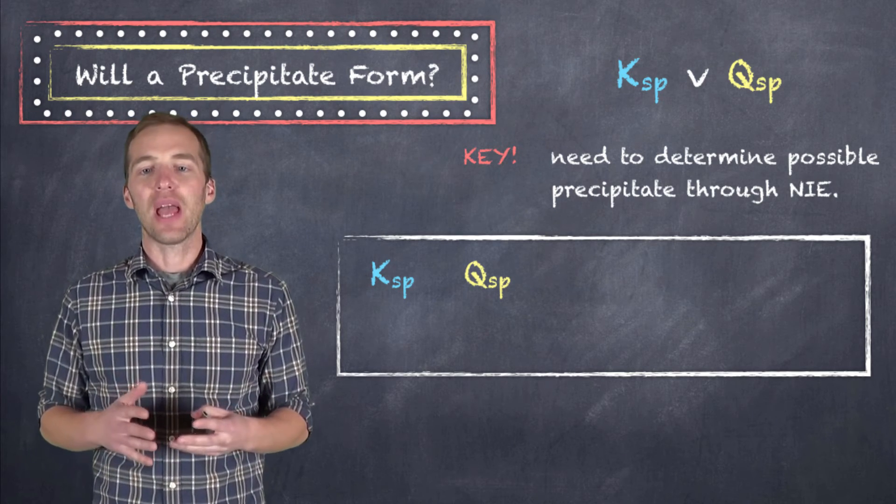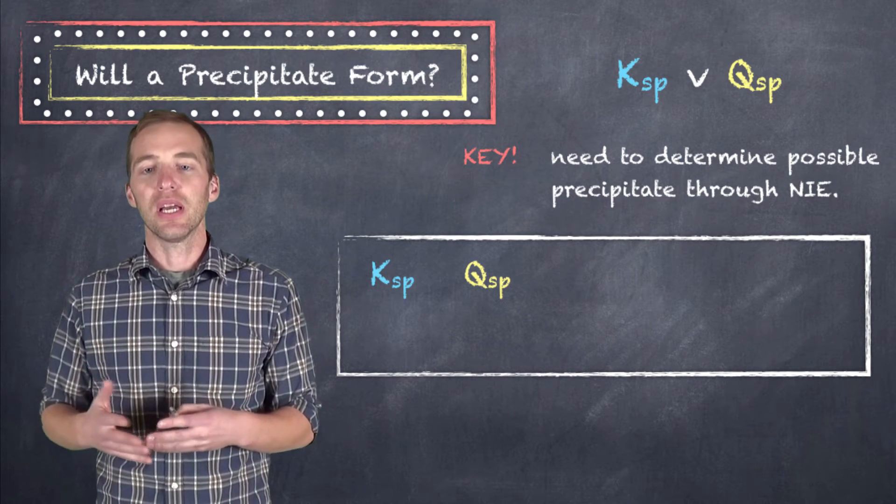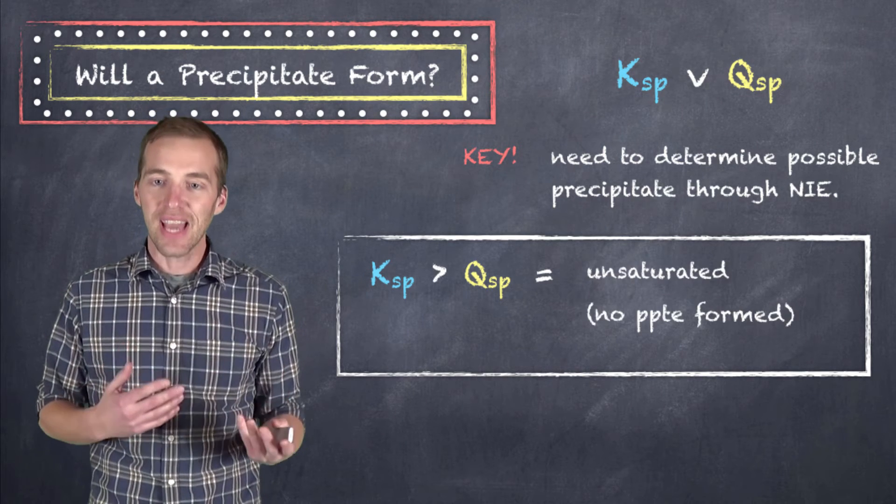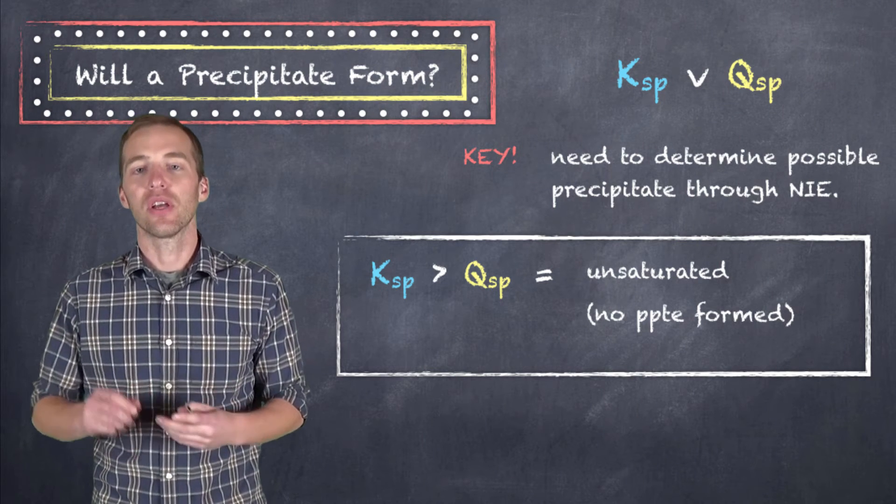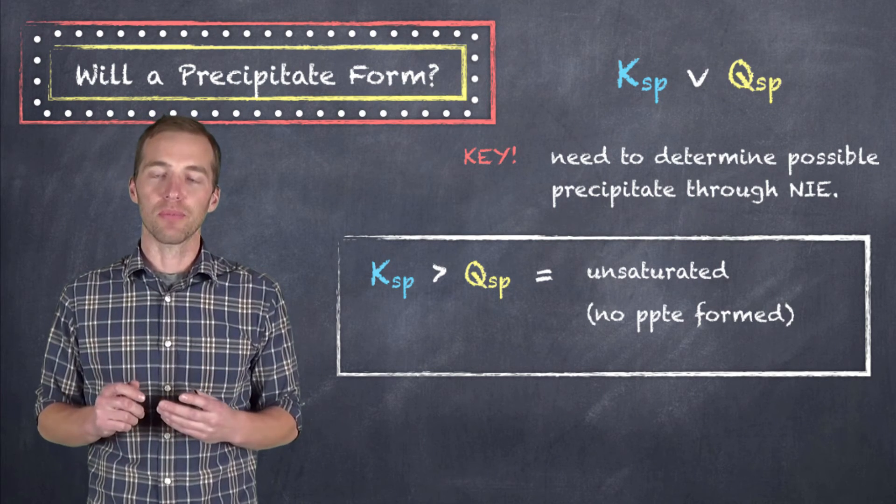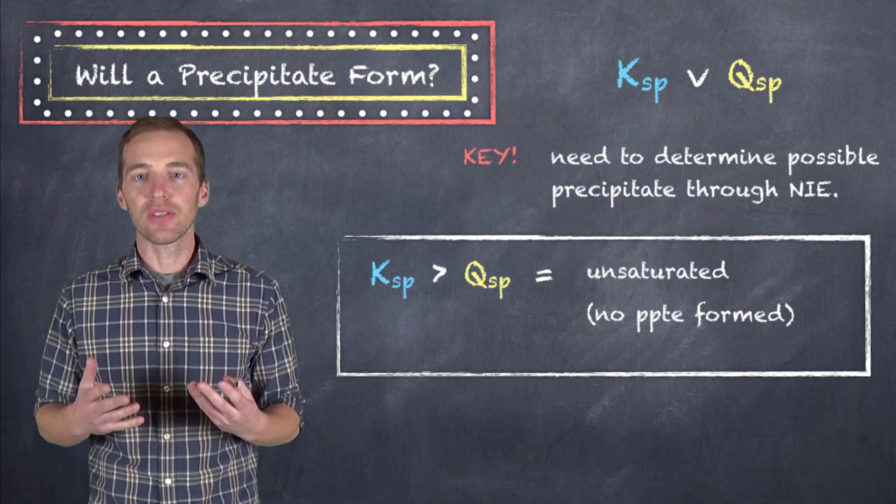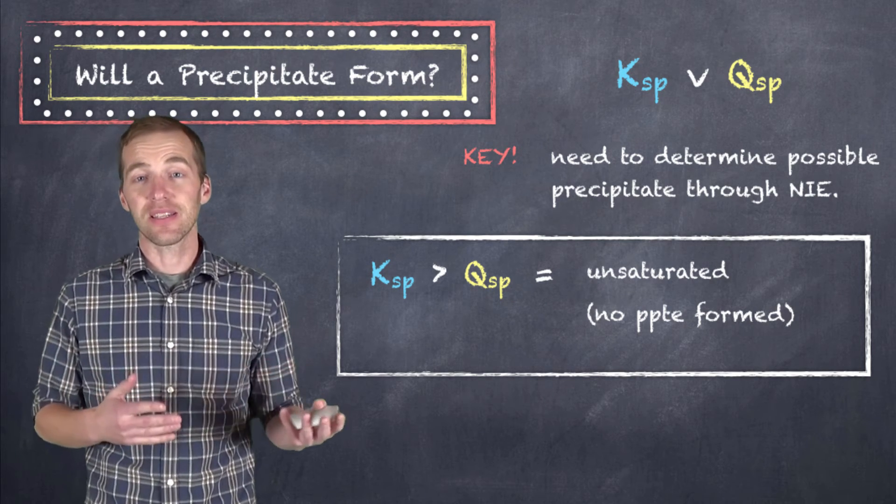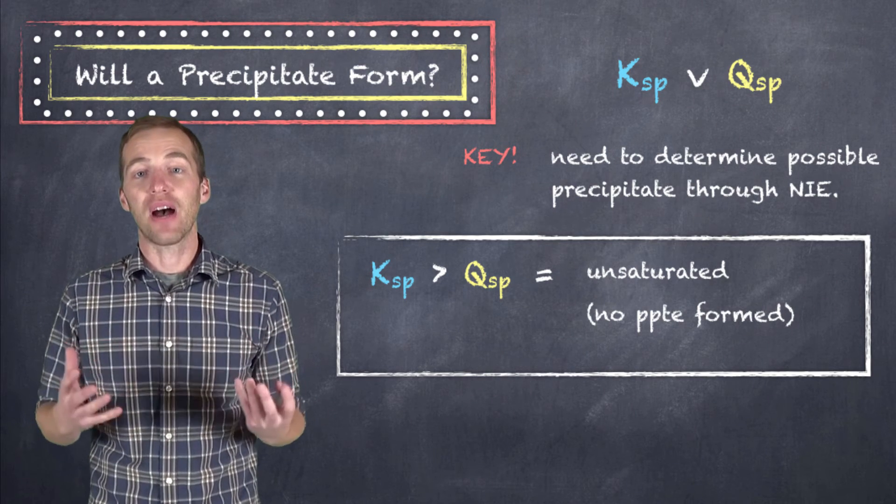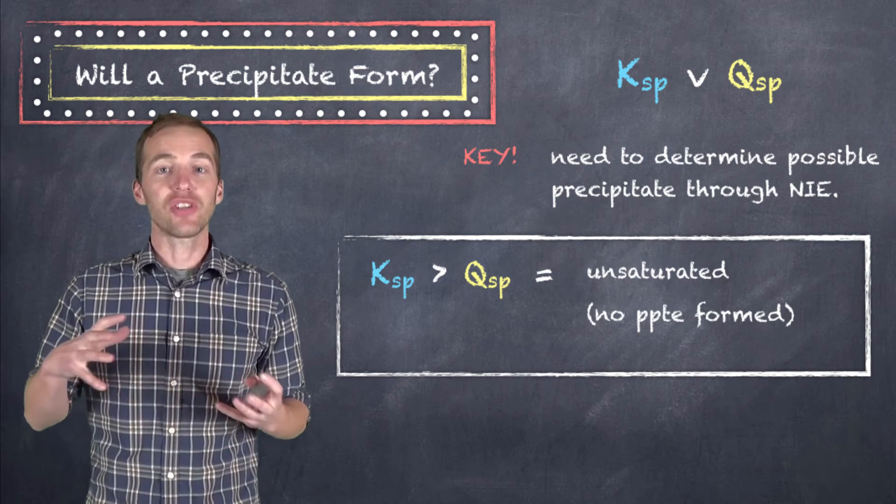If we find that we have a Qsp that is less than the Ksp, we are unsaturated. That is, there is no precipitate formed. So if we're dealing with a scenario where the Ksp is greater than the Qsp or the Qsp is less than the Ksp, we have a value where the Qsp has to increase.